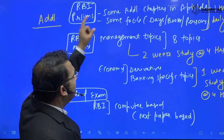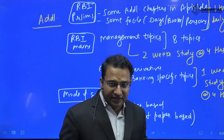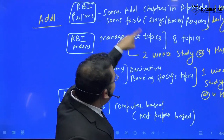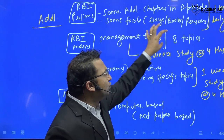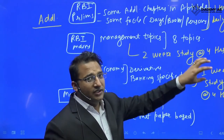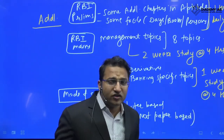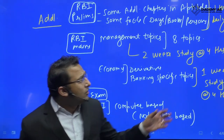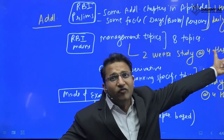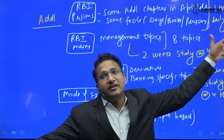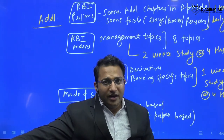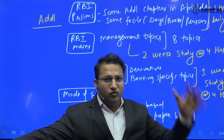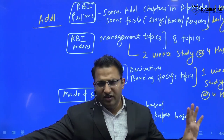Overall, there are some additional things in RBI. In the RBI prelims, there are extra chapters in the aptitude section and additional facts to study — like important days, books, and persons. If you are already preparing for a state examination you will already be doing this. In terms of time, once the RBI notification comes, start devoting one to maximum two hours daily.